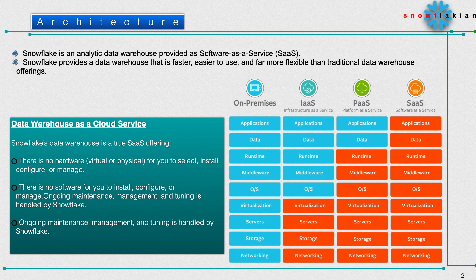In Platform as a Service, most services reside with the third-party vendor. Think of website hosting sites — you just upload your application code and the rest of the computing capacity and processes are managed by the vendor. In Software as a Service, end-to-end services are managed by the third-party vendor, from applications all the way down to networking.